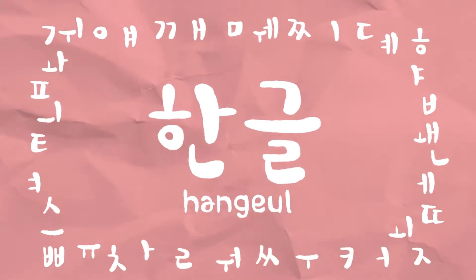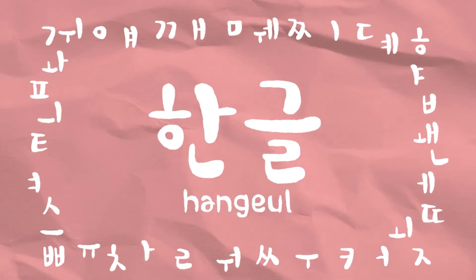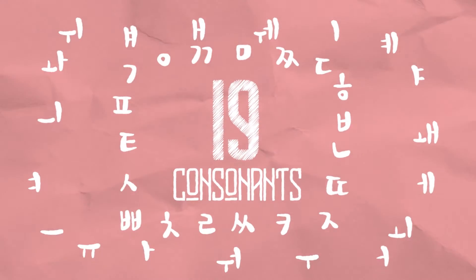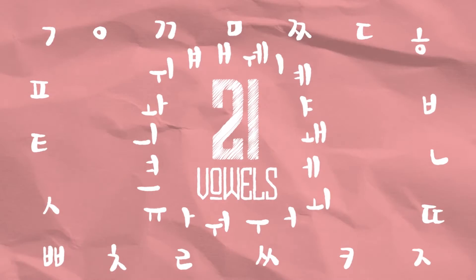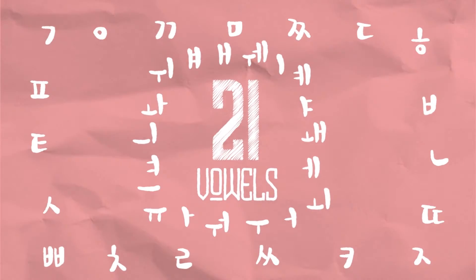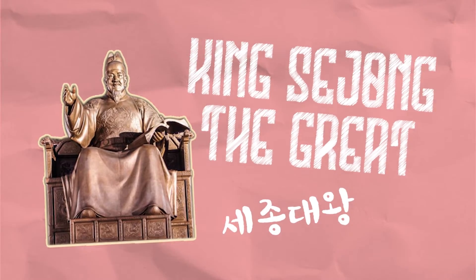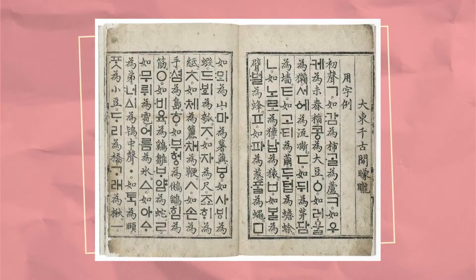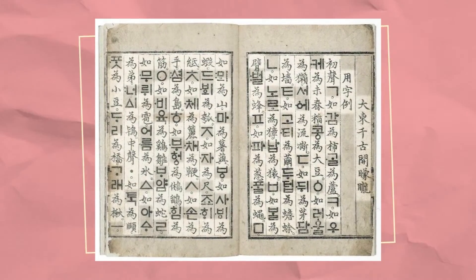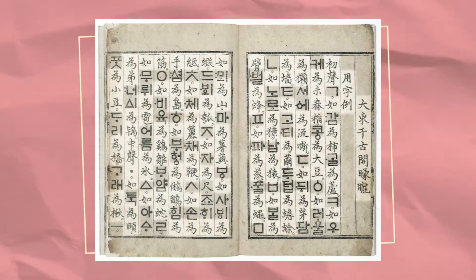The Korean alphabet consists of 19 consonants and 21 vowels. Hangul was invented by King Sejong the Great and his scholars in 1443. Koreans used Chinese characters before the Korean alphabet was created.